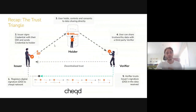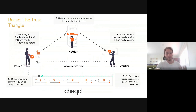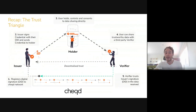The holder can then choose to share this data and these credentials with a third party verifier. That third party in the background is able to trust the issuer because they can see and resolve the DID of the issuer. On the Checked blockchain there's a DID, the verifier can see that, and then they can trust that the data I've presented them is actually from the issuer. That's the core premise of what we're trying to do on the identity side.